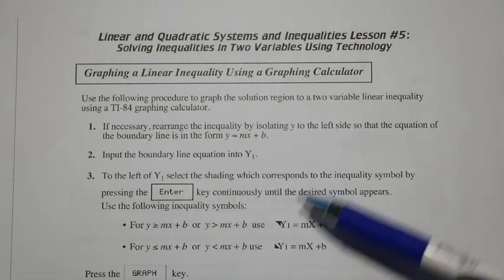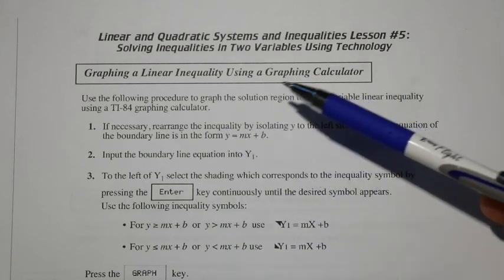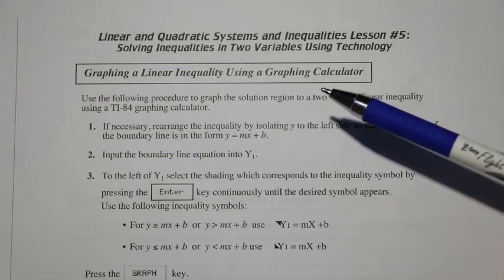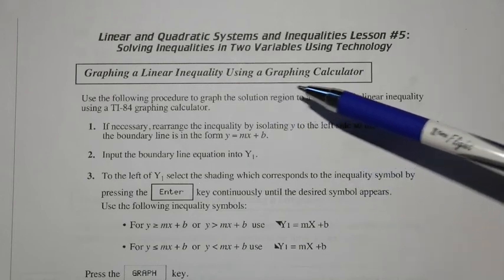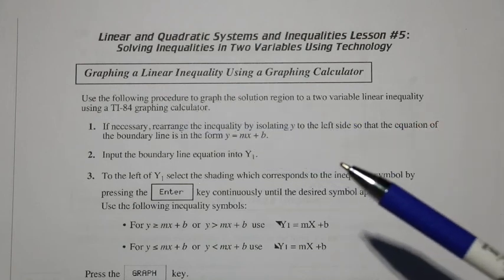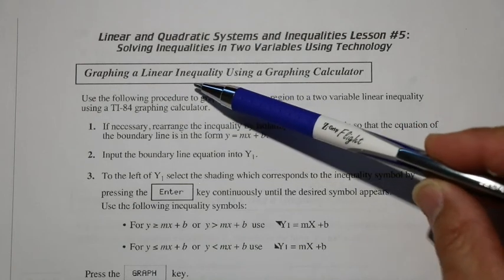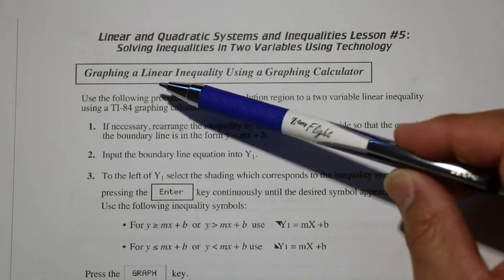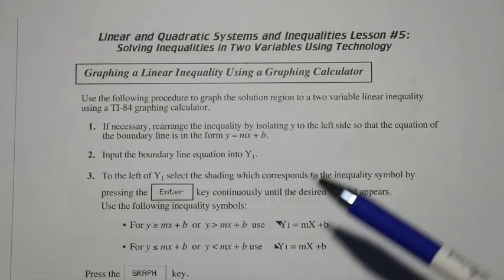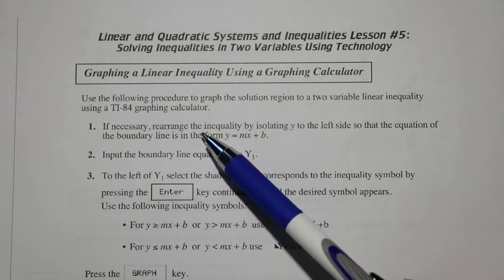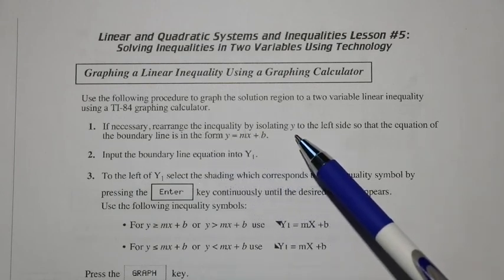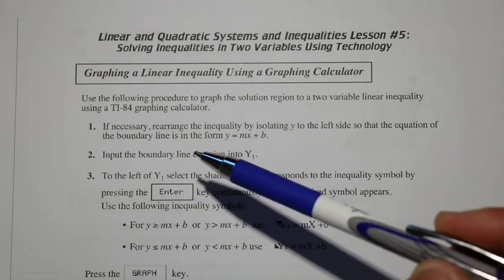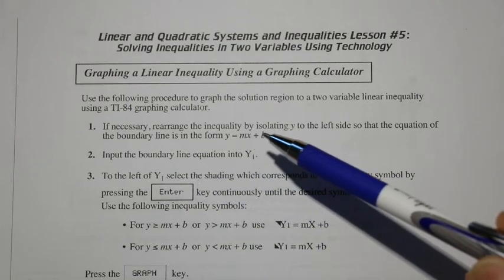We can use this following procedure. Think about graphing a linear equation using a graphing calculator — we should be very familiar with that. Once we understand the linear equation, there are just a couple of extra steps to graph a linear inequality. We're going to rearrange the inequality by isolating y to the left side so that the boundary line is in the form y = mx + b.